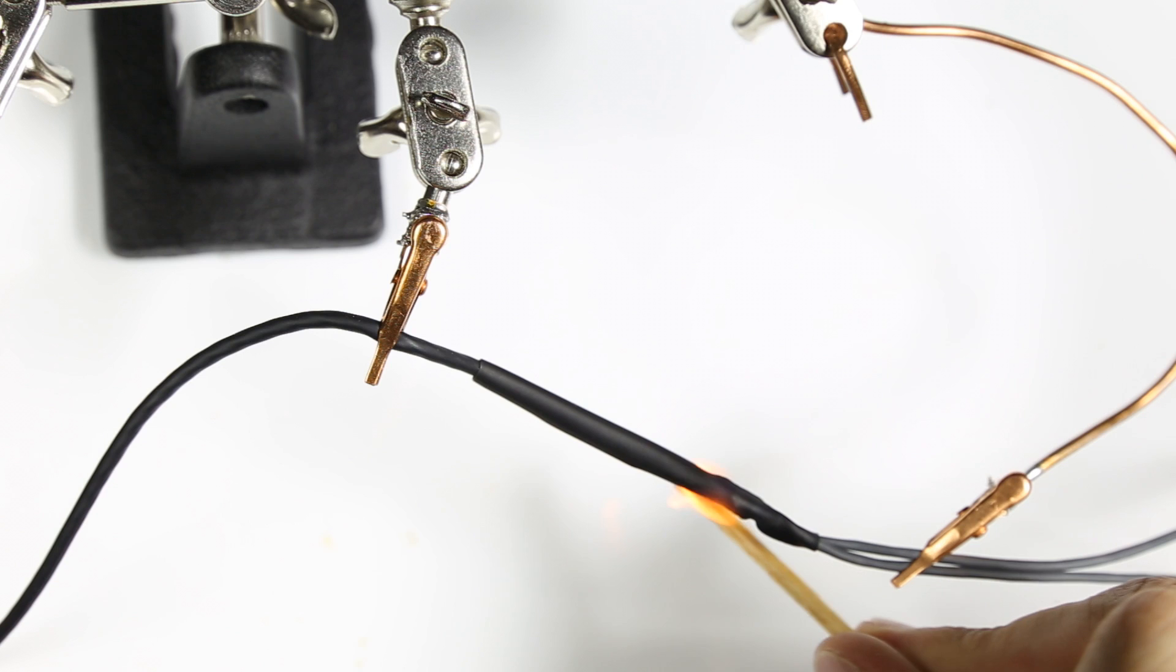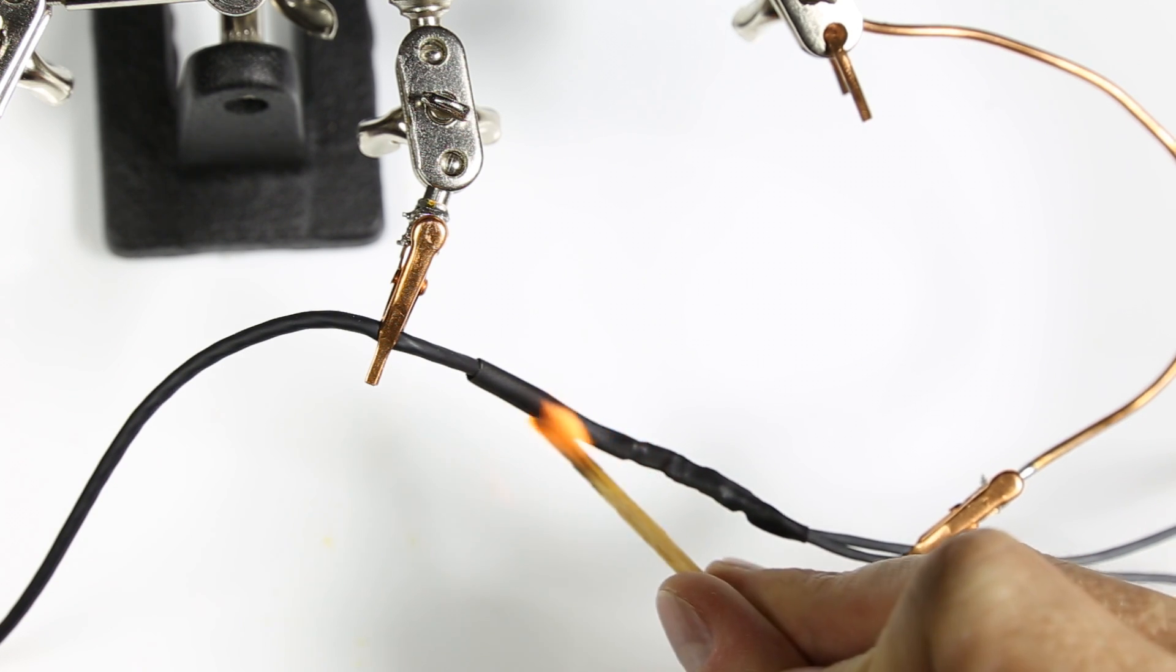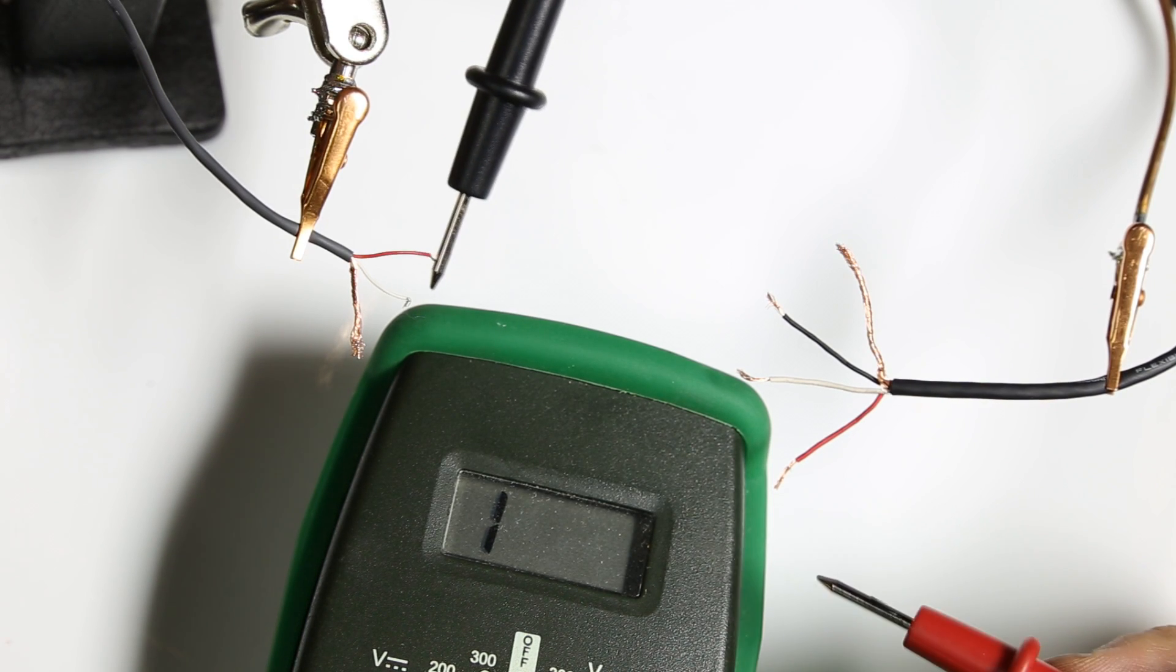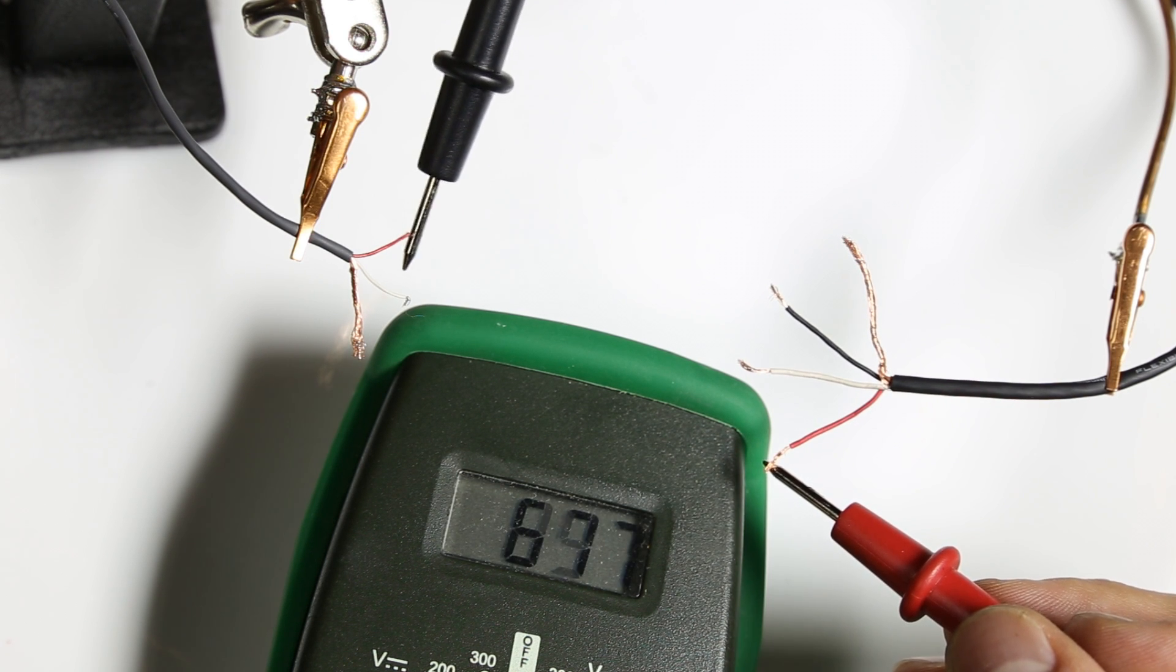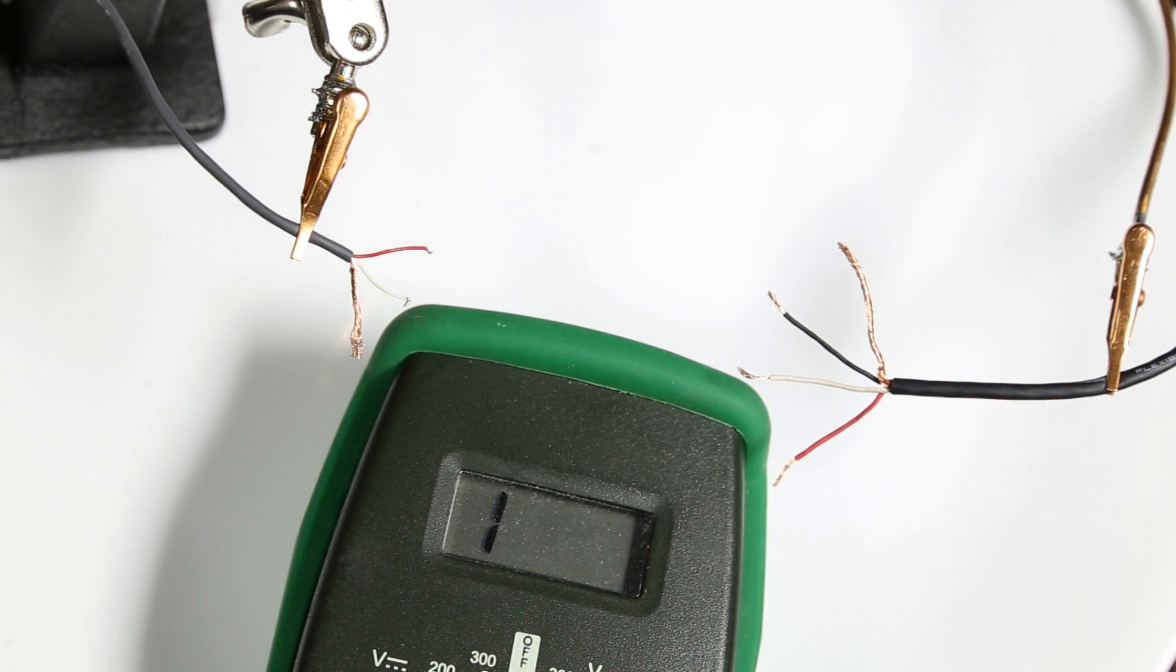To seal it up, I put heat shrink tubing over it. Like a dum-dum, I waited to test for shorts until after putting the Teflon and heat shrink on, so later I ended up tearing up all the work I did and redoing it. But I got it sorted out.